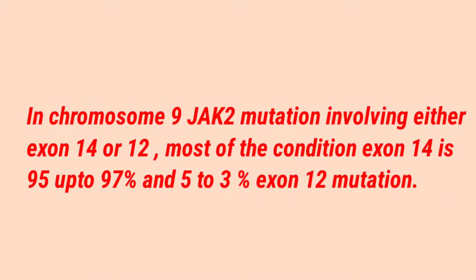Most conditions — about 95 to 97 percent — involve exon 14 mutations of JAK2. A smaller subset involves exon 12 mutations. Both mutations are located on the short arm of chromosome 9 and lead to dysregulated cell proliferation.